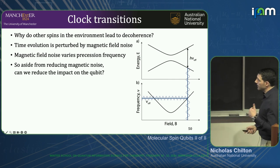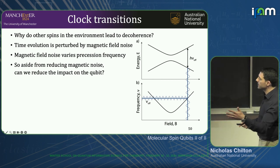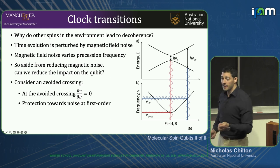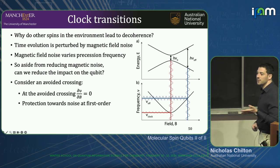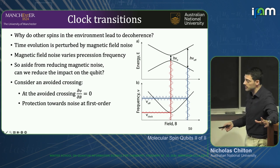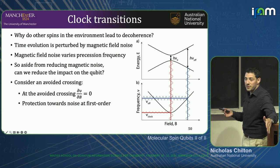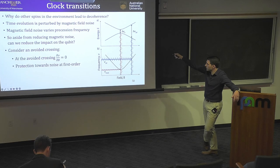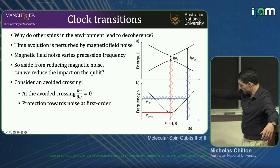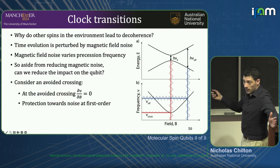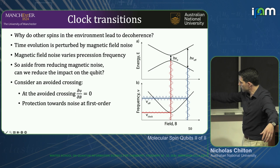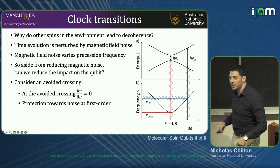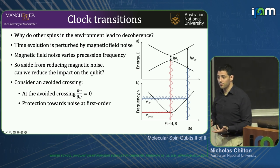You can get around that by operating at a clock transition. Aside from getting rid of noise in the environment, the way to reduce the impact is to operate where the transition is very stable. The avoided crossing in the energy levels gives you, to first order, a derivative of zero at the energy splitting right in the middle — so the transition frequency is to first order insensitive to noise in the magnetic field. Operating at this clock frequency means oscillations in the magnetic field have much less impact on your transition frequency.